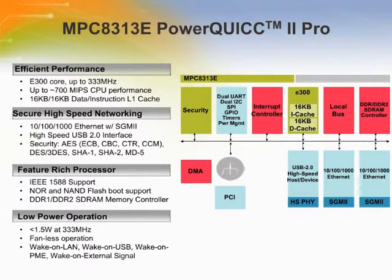The MPC8313E incorporates a unique configuration of the E300 core supporting up to 333 MHz speed with up to around 700 MIPS CPU performance. The L1 instruction and data caches and on-chip memory management units support up to 16 KB of memory.